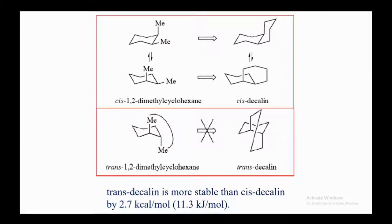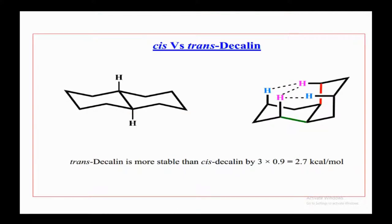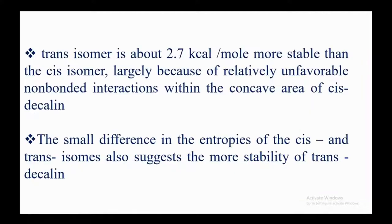Trans-decalin is more stable than cis-decalin by 2.7 kilocalories per mole (11.3 kJ/mol). The interactions present in cis-decalin and absent in trans-decalin account for 3 × 0.7 = 2.1 kJ/mol. The trans isomer is about 2.7 kcal/mol more stable than the cis isomer, largely because of relatively unfavorable non-bonded interactions within the concave area of cis-decalin.